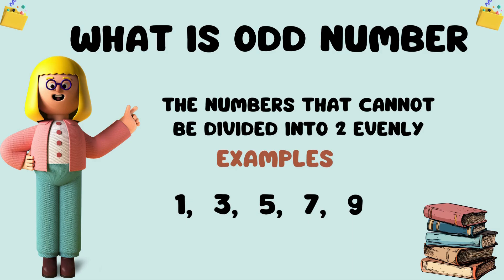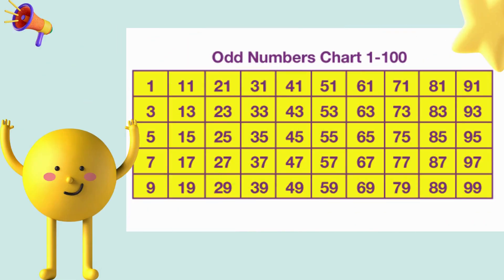Let's move to another picture. Look at this chart. You can easily understand about odd numbers: 1, 3, 5, 7, 9, 11, 13, 15, and so on.